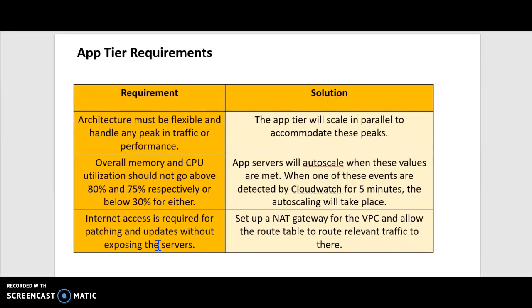In terms of app tier requirements, the app tier, just as with the web tier, will scale with auto-scaling. And in terms of the overall memory and CPU utilization — the application not going above 80% and 75% — it would be the same situation again, where CloudWatch is keeping an eye on it.